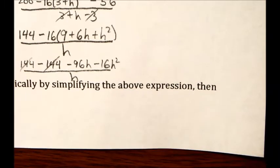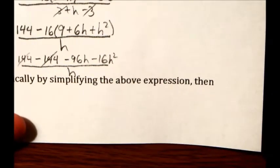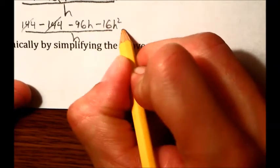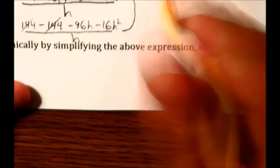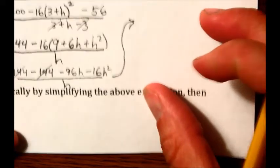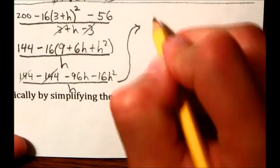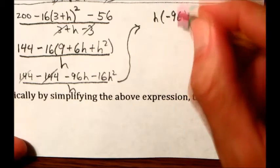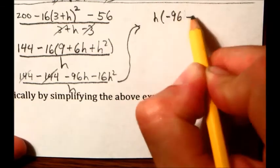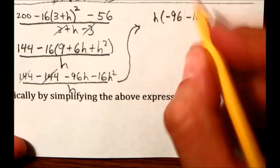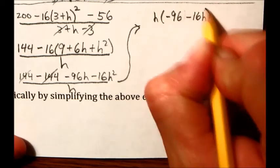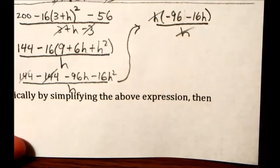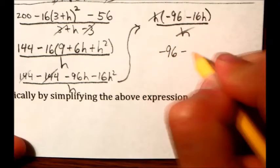My second promise to you was that you should be able to factor out an h now. Well, that's of course true because everything has an h. So let's pull out an h now. Come up here. Take out an h on top. We get negative 96, and we don't need the h there, right? Minus 16. I guess we could have factored out a 16h, technically. And this is all over h. This reduces, and we're left with negative 96 minus 16h.